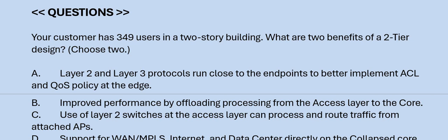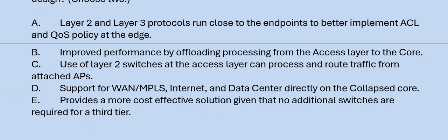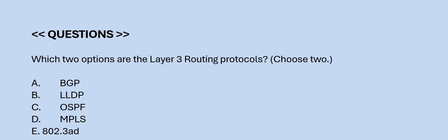Next question: Your customer has 349 users in a two-story building. What are the two benefits of a two-tier design? Choose two. Option A: layer 2 and layer 3 protocols run close to the endpoints to better implement ACL and QoS policy at the edge. Option B: improved performance by offloading processing from the access layer to the core. Option C: use of layer 2 switches at the access layer can process and route traffic from attached APs. Option D: supports WAN MPLS, Internet, and Data Center directly on the collapsed core. Option E: provides a more cost-effective solution given that no additional switches are required for a third tier. The correct answers are Option A and E.